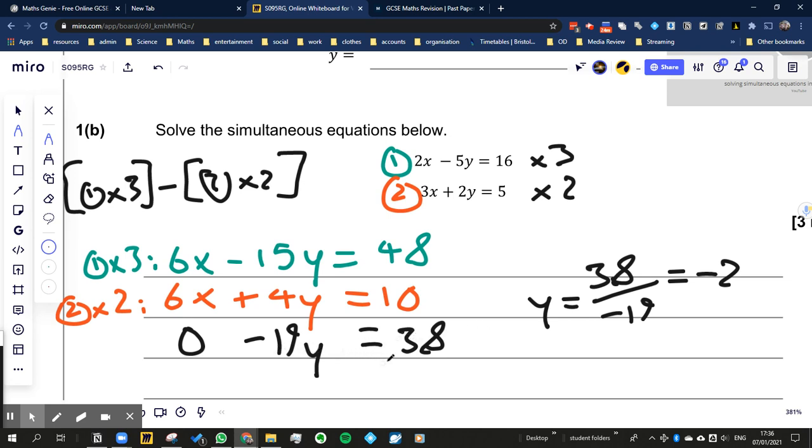So if you divide both sides by minus 19, we end up with y is equal to 38 divided by minus 19, which is equal to minus 2. So that gives us our value for y.